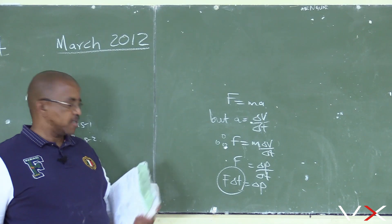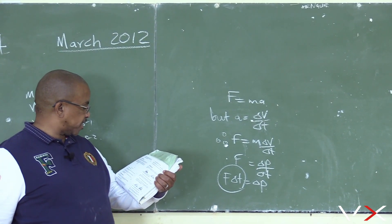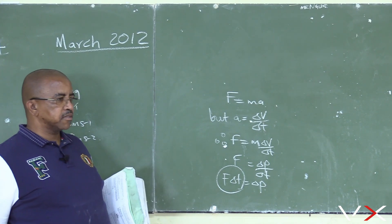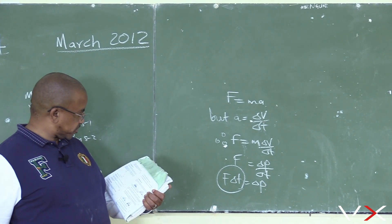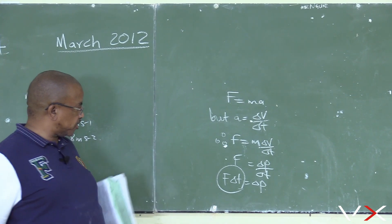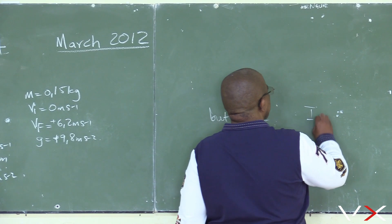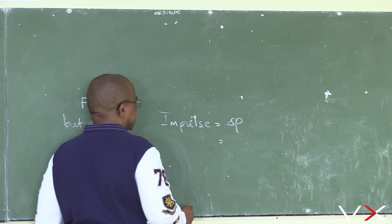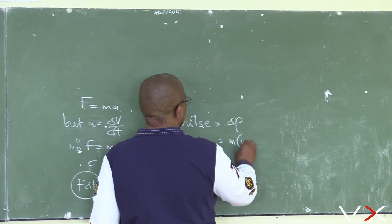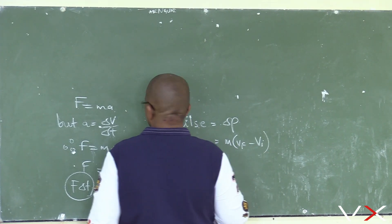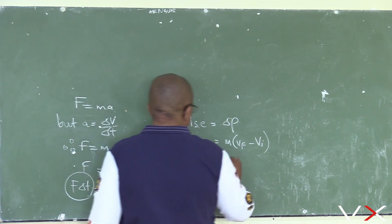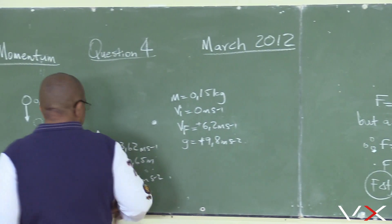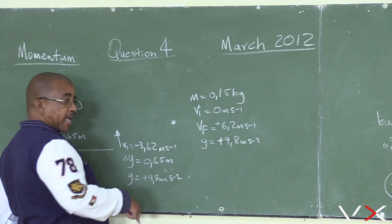Question 4.2: Calculate the magnitude of impulse of the net force applied to the ball during the collision with the floor. The magnitude of the impulse of the net force applied to the ball — impulse is the change in momentum, which is m times (vf minus vi). The mass of the object is 0.15 kg.